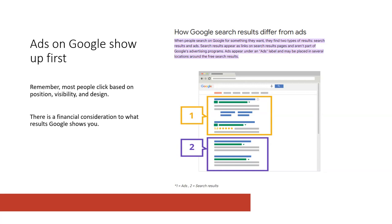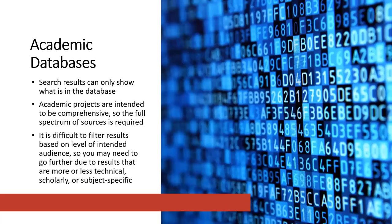So be aware that beyond anything of ideology, political bias, or unconscious bias based on elements of marginalization, there is a financial consideration to what results Google and many other search engines show you. All things to be thinking about when you're doing searches, especially in Google but in other search engines as well. I also want to talk a little bit about academic databases.